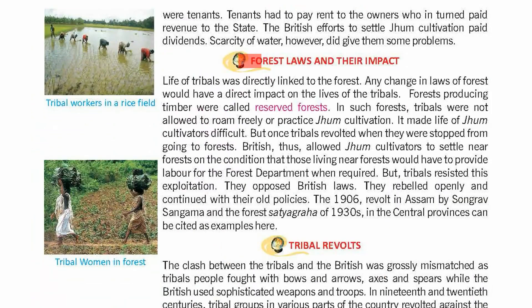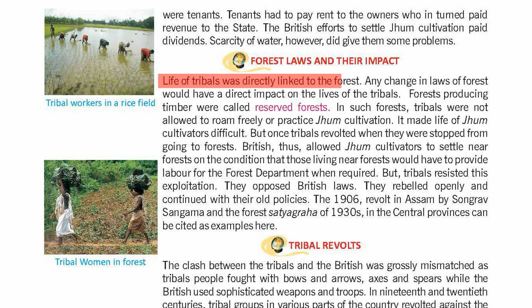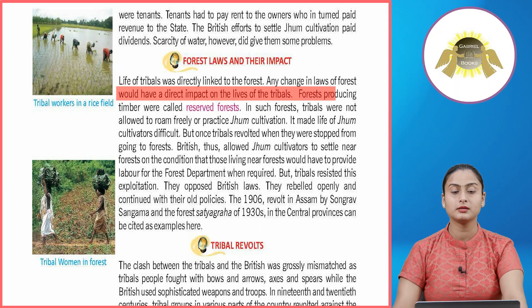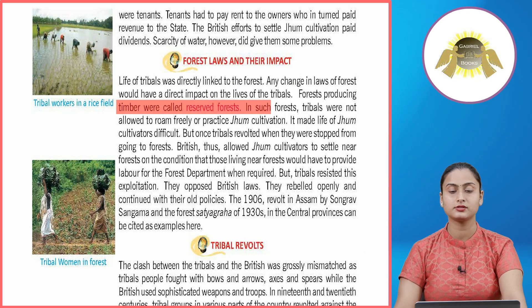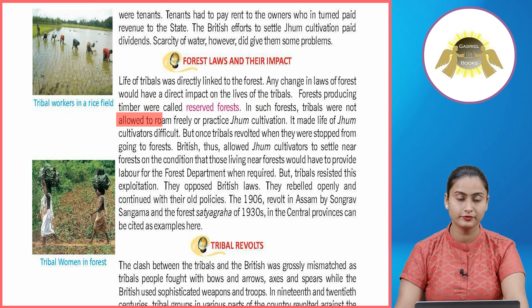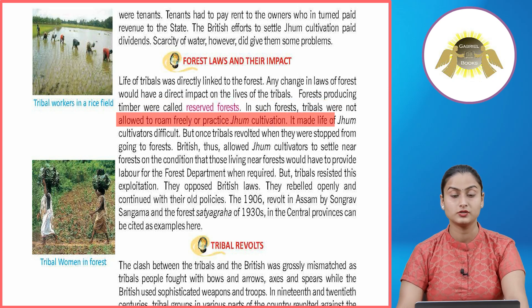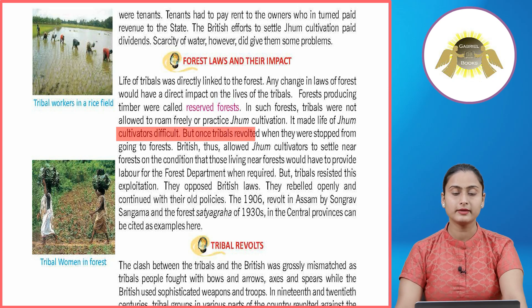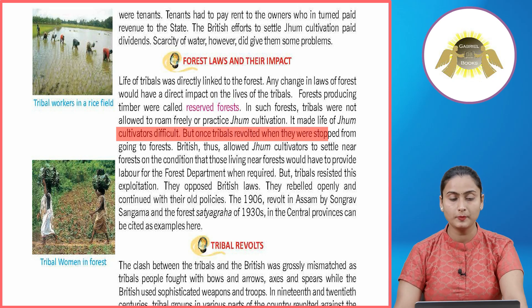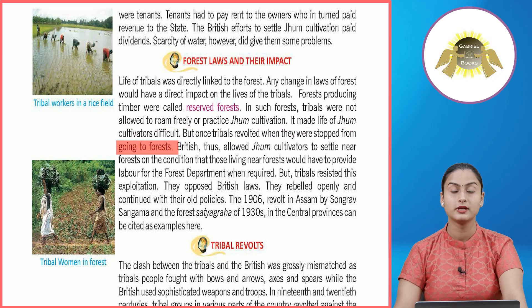Forest laws and their impact: the life of tribals was directly linked to the forest, so any changes in forest laws had a direct impact on tribal lives. Forests producing timber were called reserved forests, in which tribals were not allowed to roam freely or practice jhoom cultivation. This made life difficult for jhoom cultivators, and once tribals revolted when they were stopped from entering forests.